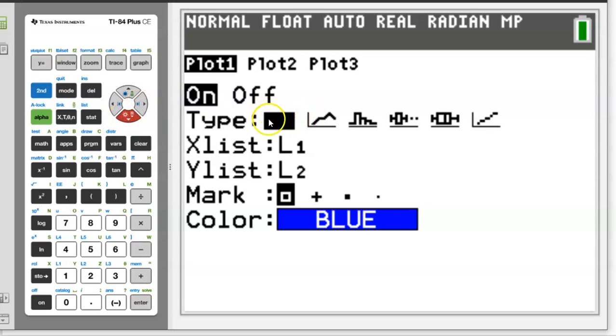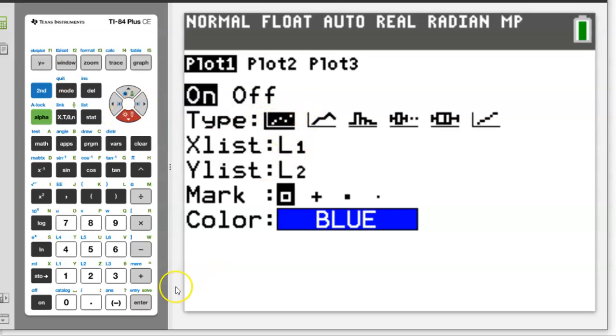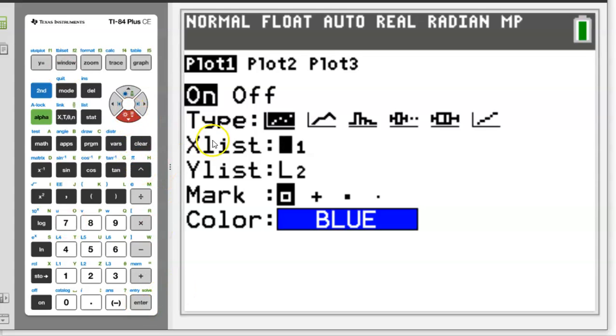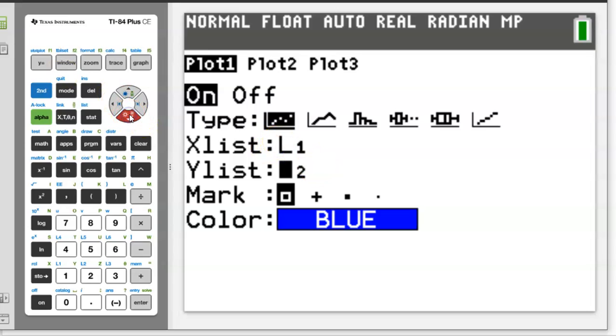Then under type, you're going to select the very first little graph there. It very much looks like a scatter plot, bunch of little dots there. And then you're going to make sure that the X list is your explanatory data that we had in list one. And the Y list is the response data that we had in list two. If for some reason those are not there, like let's just say the Y list was empty. To get the L2, you hit second number two.